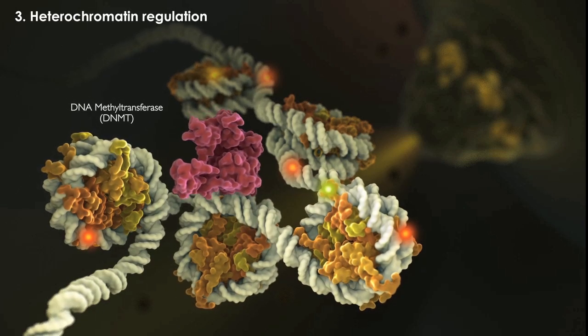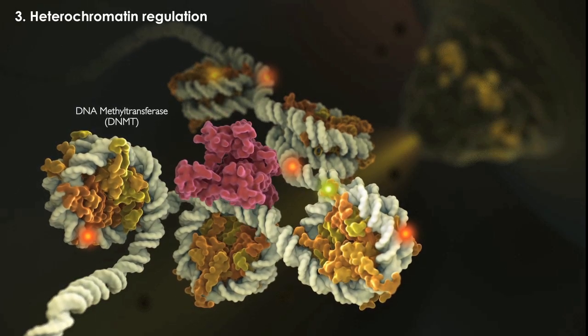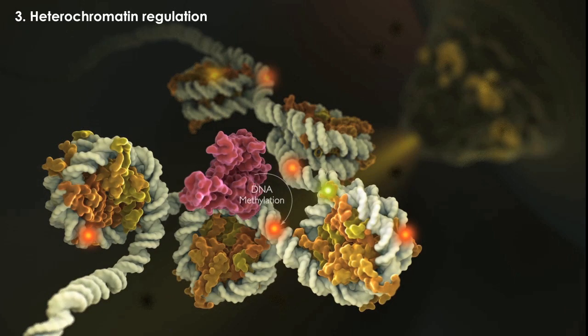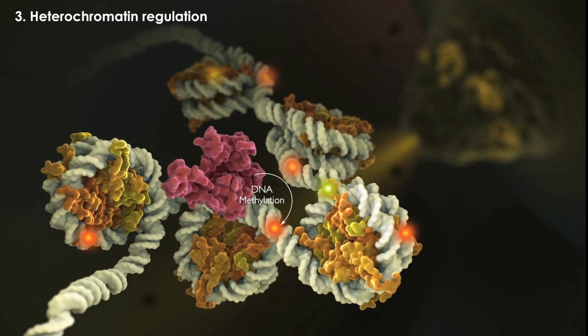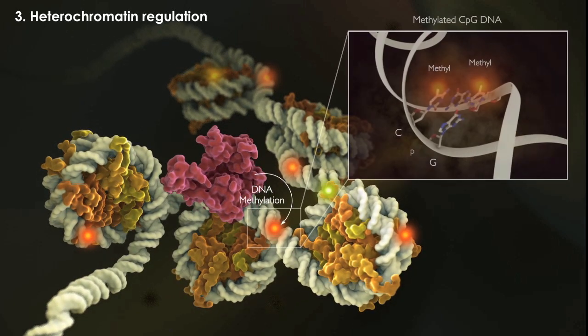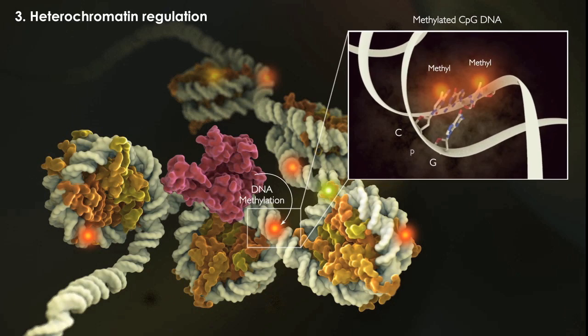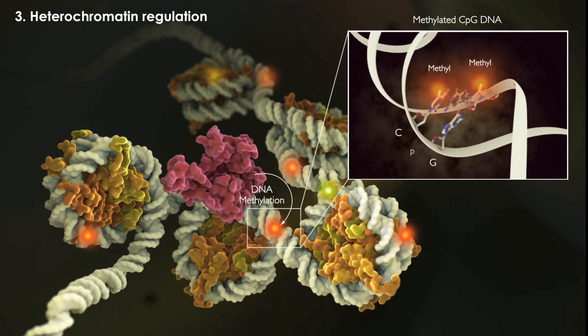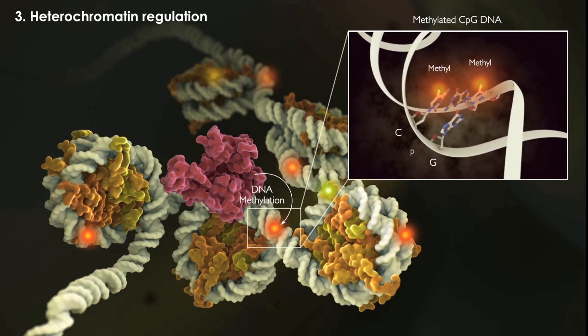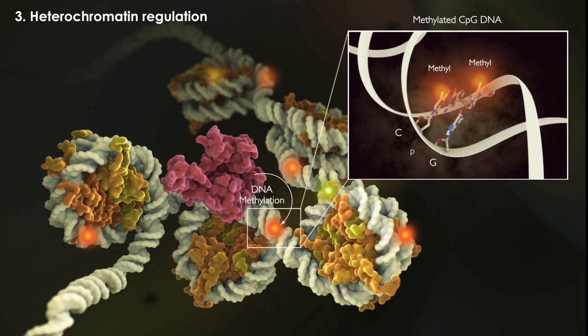Heterochromatin, in contrast, is thought to be characterized by a more repressive, tight bundling of nucleosomes, which impedes transcription factors from gaining access to regulatory sites on the DNA.